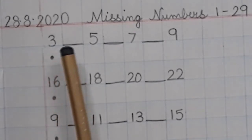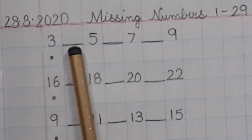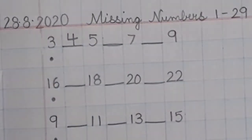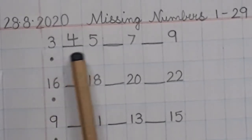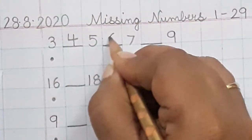So 3, what comes after 3? 3, 4. Good. 3, 4, 5, 6. Brilliant.